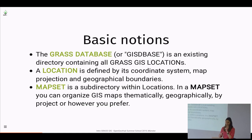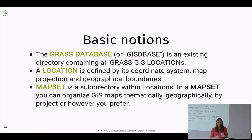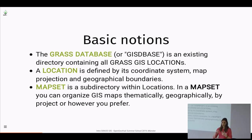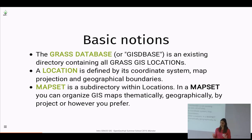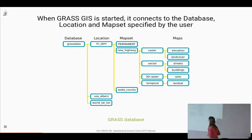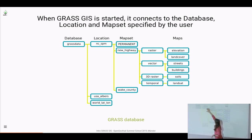Within every location there is always a PERMANENT mapset — PERMANENT in caps. That mapset stores information about the coordinate system, the region boundaries, and such. We use it to store base maps or data that is not supposed to change — like borders, county borders, rivers, and roads. So the structure looks like: the root GRASS data directory, then locations, and inside each location the PERMANENT mapset plus other mapsets you create and import your data into.